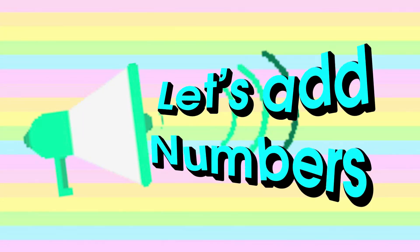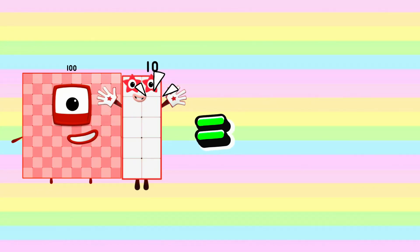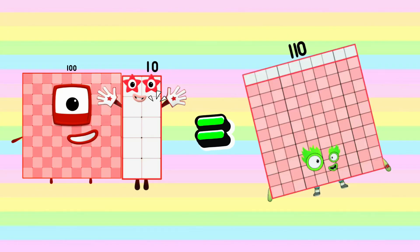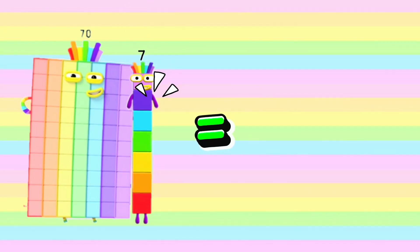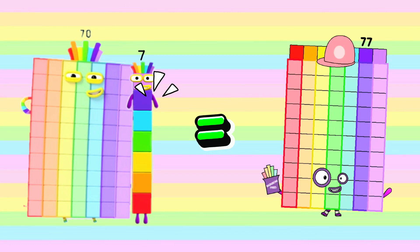Let's add numbers. 100 add 10 is equals to 110. 70 add 7 is equals to 77.